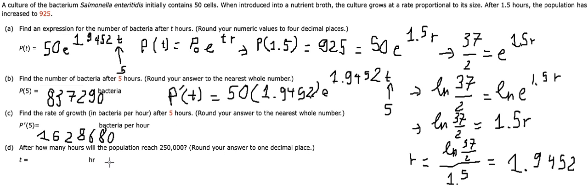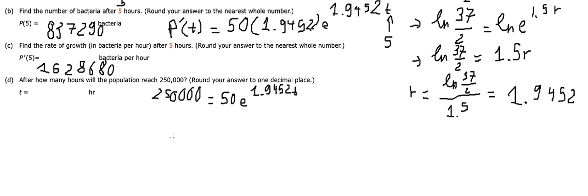Now the last one: after how many hours will the population reach 250,000? Round to one decimal place. So we have P(t) = 250,000 = 50*e^(1.9452t). We divide both sides by 50.